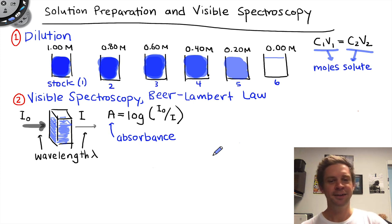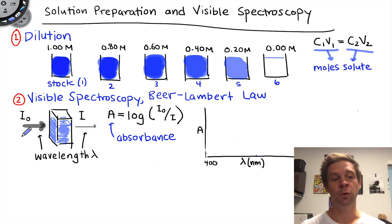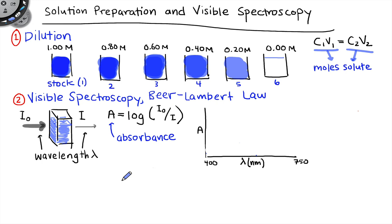When we plot absorbance as a function of the wavelength of light that is impinged on the sample and measured, we get what's called a spectrum. A typical visible or ultraviolet spectrum is going to look something like this with one, maybe two peaks. Notice the range of wavelengths here, the visible range from about 400 nanometers to about 750 nanometers with purple light down here and red light up here.